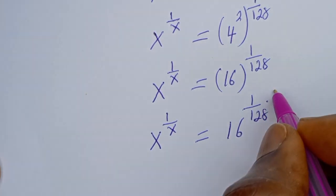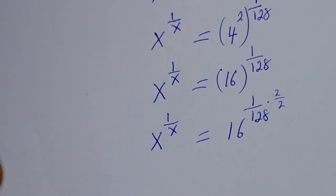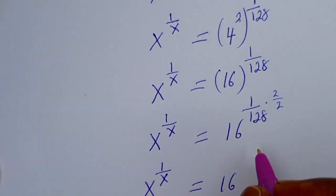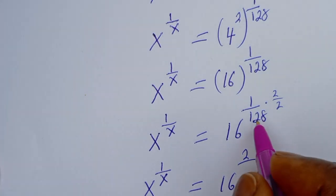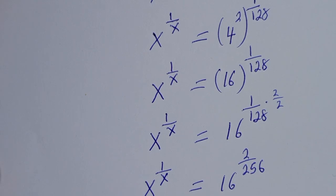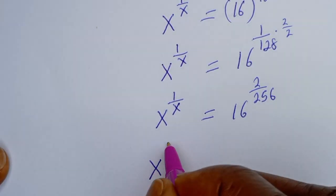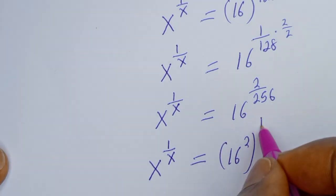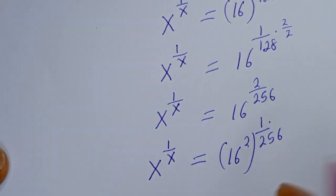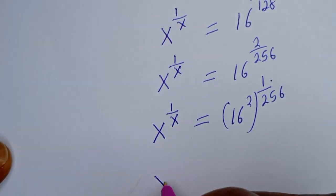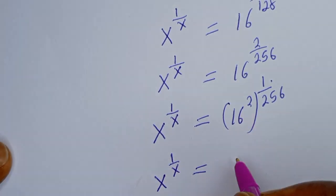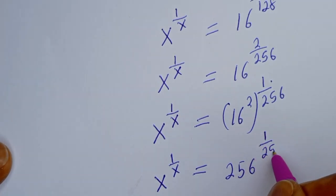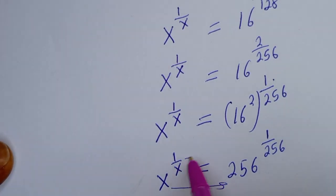We can also multiply this by 2 over 128. Then we have s to the power of 1 over s is equal to 16 to the power of 2 over 256. This can be written as 16 squared to the power of 1 over 256. So s to the power of 1 over s is equal to 256 to the power of 1 over 256. By comparing both sides, this equals this and this equals this.